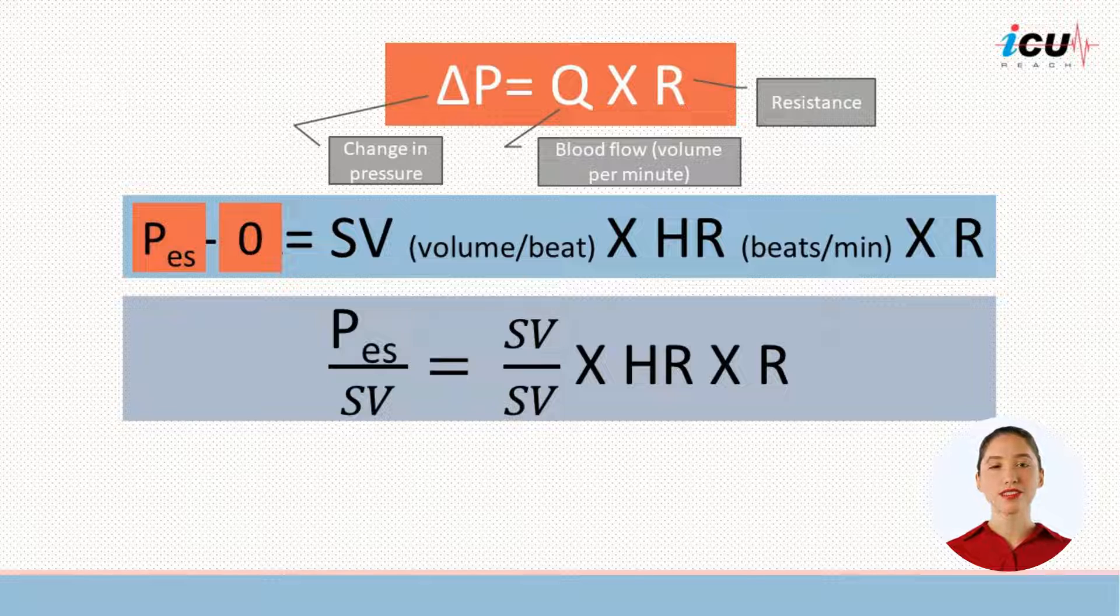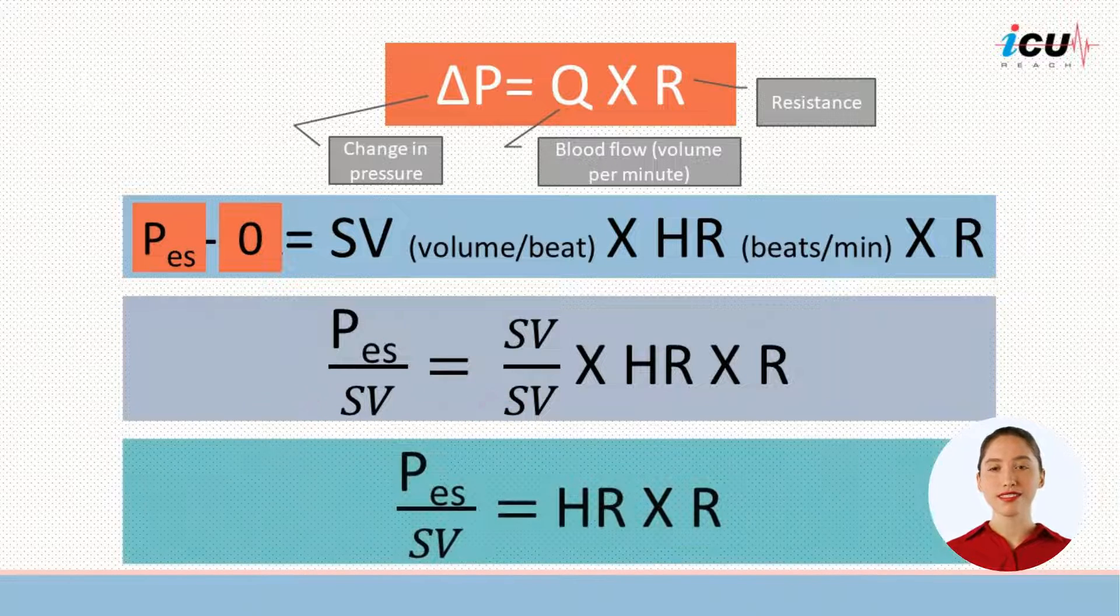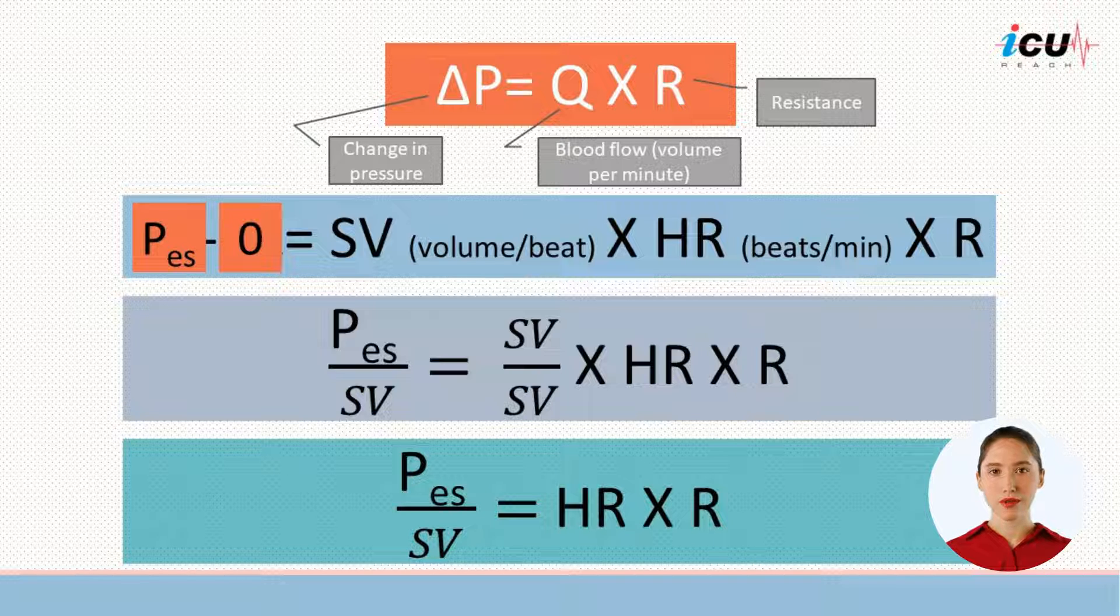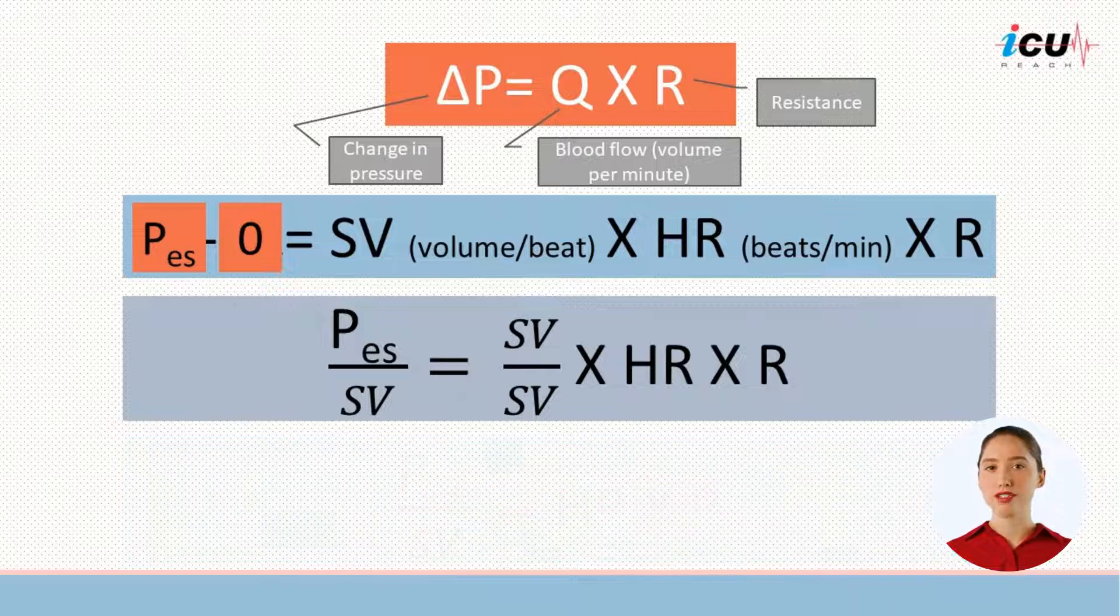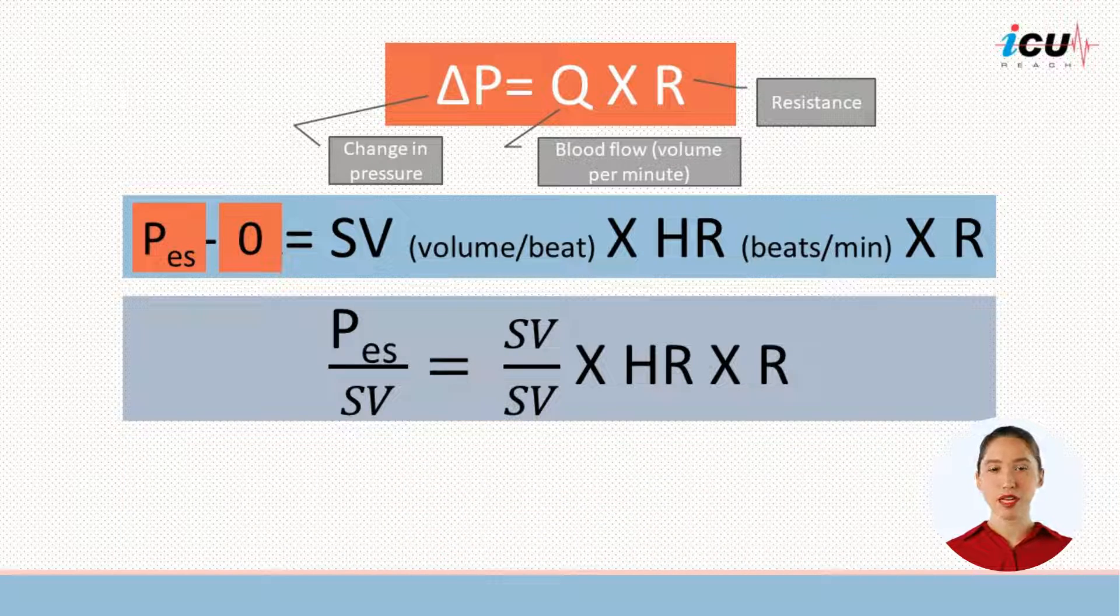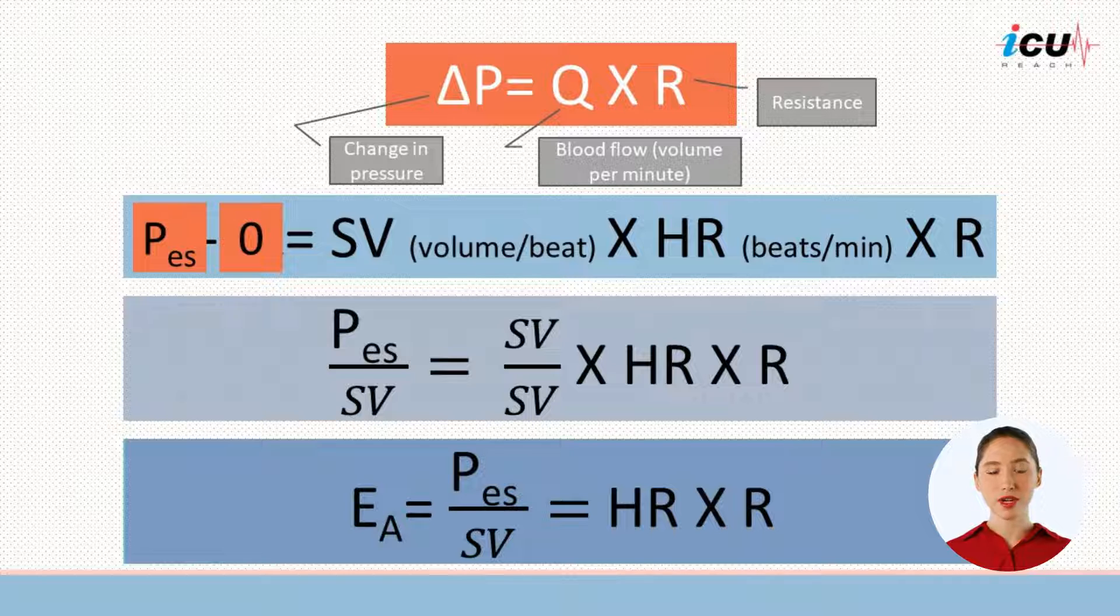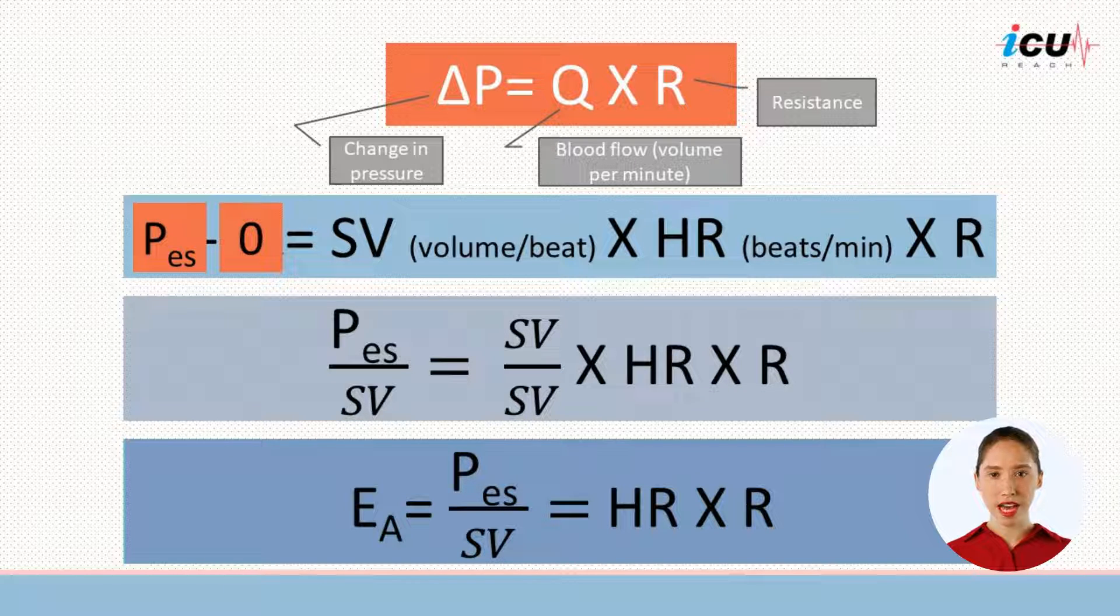Now let's divide the two sides of the formula by stroke volume, then the formula becomes end-systolic pressure divided by stroke volume equals heart rate multiplied by the resistance. Well, pressure over volume is elastance, then the final formula will become arterial elastance equals heart rate multiplied by the resistance, and that means that arterial elastance is determined by heart rate and resistance.